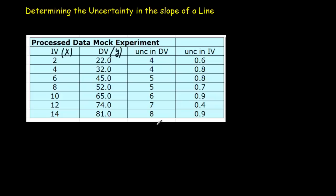We've got uncertainties in the dependent variable or our delta y's and an uncertainty in our independent variable or our delta x's.